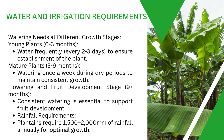At the young stage — zero to three months — you need to water frequently, every two to three days, to allow the plant to grow. Between three to nine months, you want to water once a week, especially during dry periods, to maintain consistent growth. At the flowering stage, water consistently to support fruit development. Plantain requires about 1,500 to 2,000 mm of rainfall.